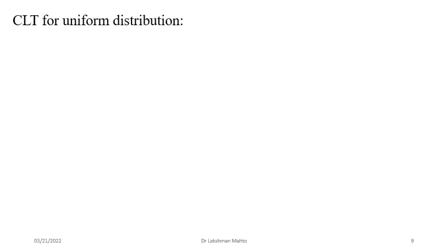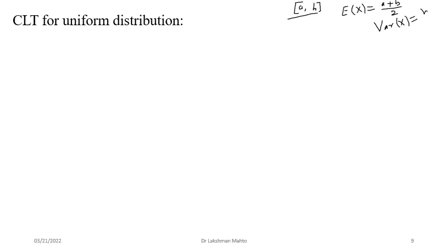Now we consider the uniform random variable, whose distribution parameters a and b are unknown. For a uniform random variable on interval [a, b], the mean is (a+b)/2 and variance is (b−a)² /12. Since a and b are unknown, we don't know mu or sigma squared. With the Central Limit Theorem, we aim to derive the sampling distribution of Zn and show it converges to a standard normal.